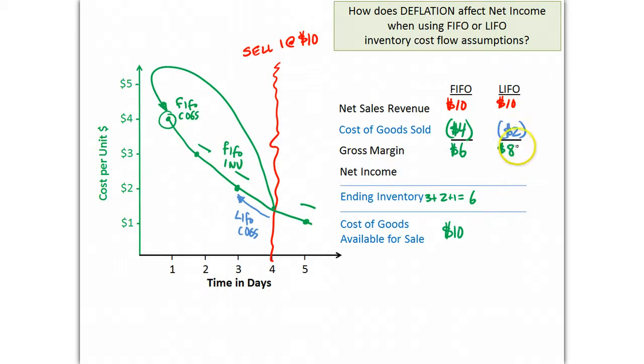Now, as you can see, LIFO wound up with a higher gross margin because it had a lower cost of goods sold. Since it's expensing this lower cost because it's in a deflationary environment, it has a higher gross margin, whereas FIFO expensed the higher cost and therefore resulted in a lower gross margin. What that also means is that LIFO will have a higher net income and FIFO will have a lower net income.